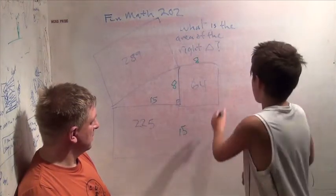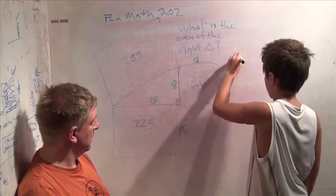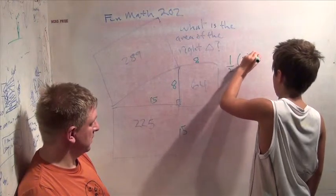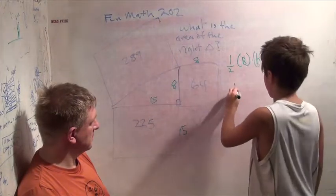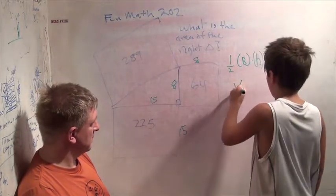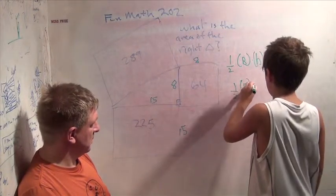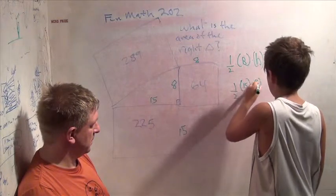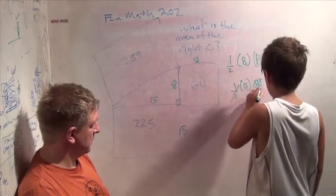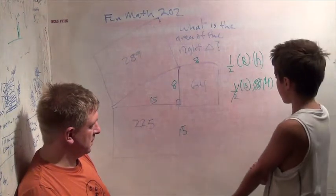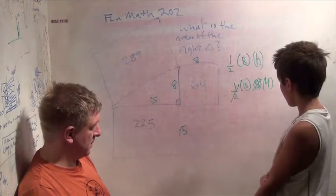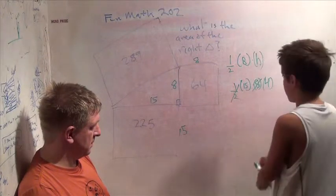So the area of the triangle is 1 half base times height. So it's 1 half 15 times 8. So we need to cancel this and we get a 4. So it's 15 times 4, which is 60.